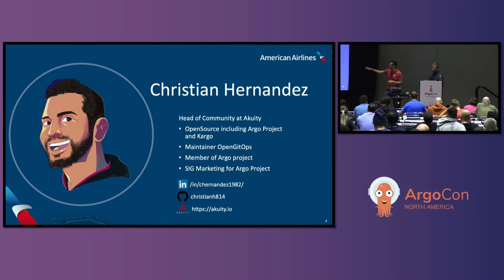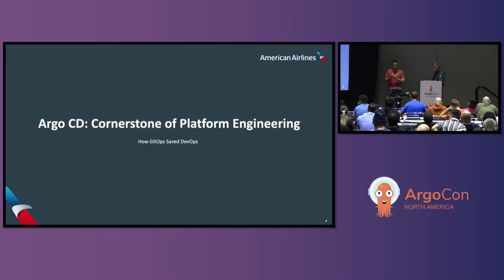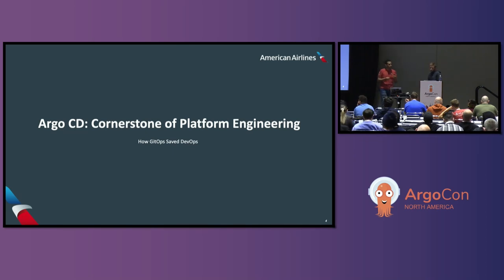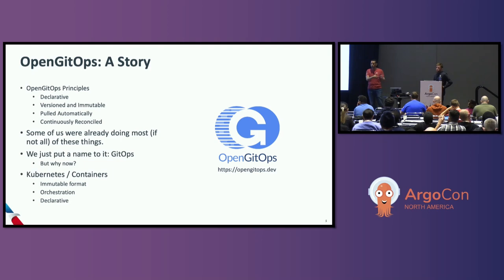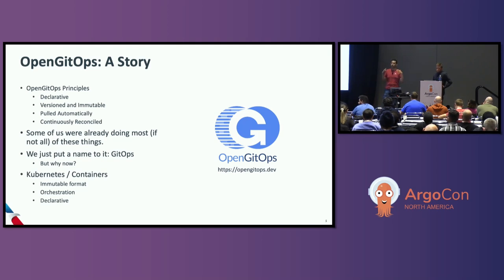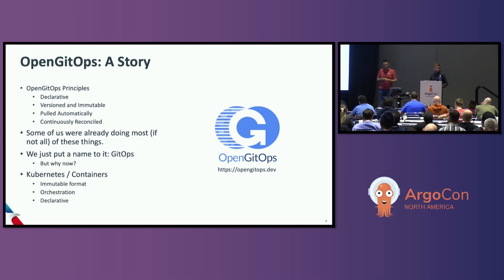I'm going to start by talking about ArgoCD as the cornerstone of platform engineering, beginning with a backstory on OpenGitOps. OpenGitOps brought together people from the Argo community, the Flux community, and companies like AWS, Red Hat, GitHub, Microsoft, and Codefresh to define what GitOps actually means. We came up with guiding principles: it needs to be declarative, versioned and immutable, pulled automatically, and continuously reconciled. You can read all about it at opengiops.dev.